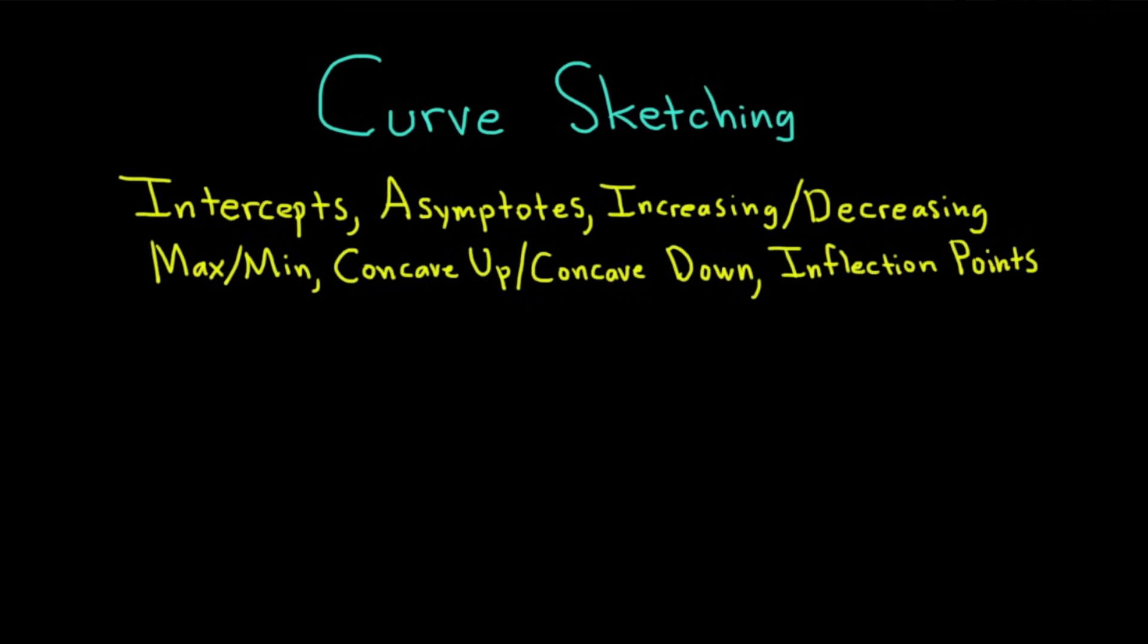Whenever you're trying to sketch a curve, you should try to find the things you see here on the screen: intercepts, asymptotes, where the function is increasing or decreasing, any maximums or minimums, concave up or concave down, and any inflection points. You won't always be able to find all of these things, but most of the time you can find quite a few of them. Let's go through an example where we attempt to find everything you see here on the screen.